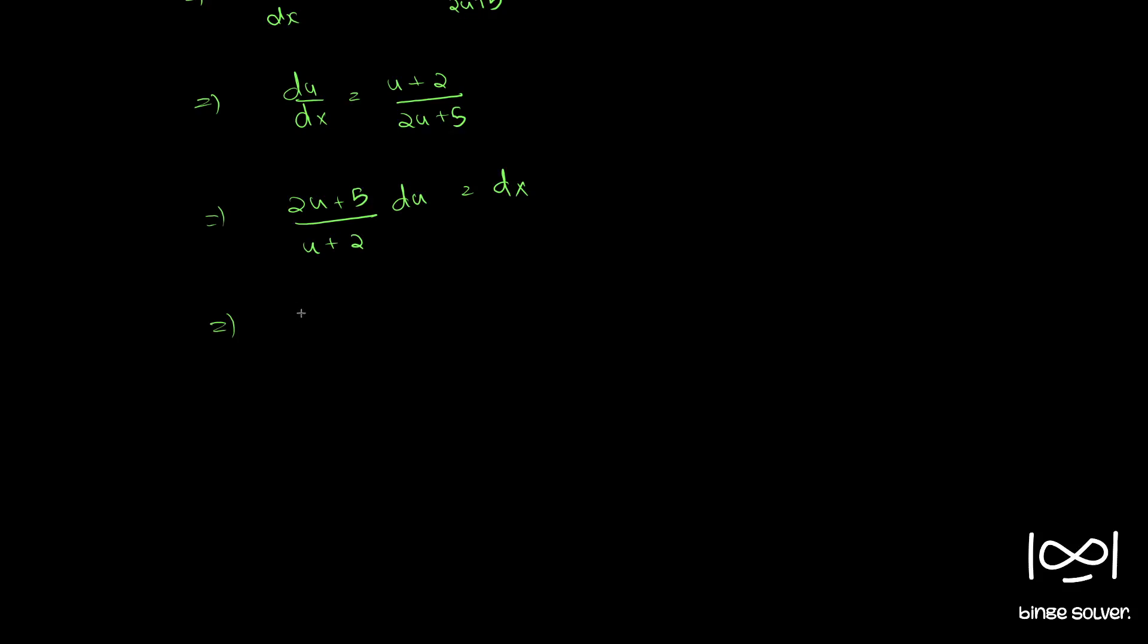So, we can write this as 2 times u plus 2 plus 1, 2u plus 4 plus 5. So, this becomes u plus 2 du equal to dx, which is opening, we get 2 plus 1 by u plus 2 du equal to dx.